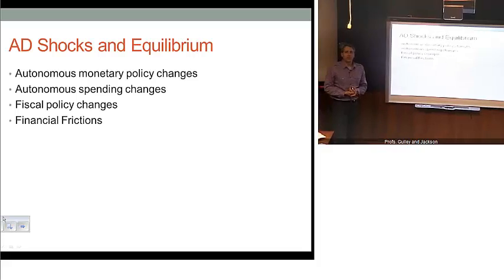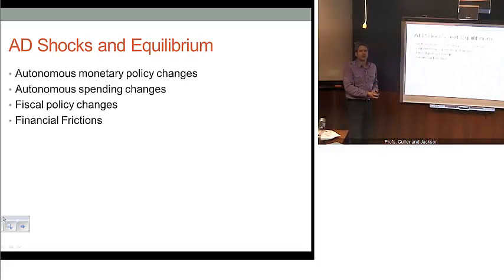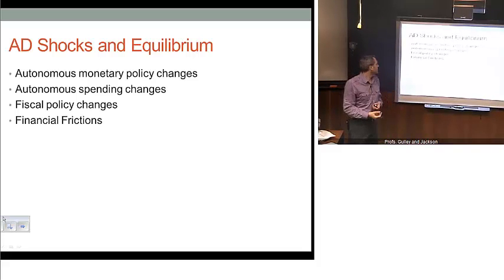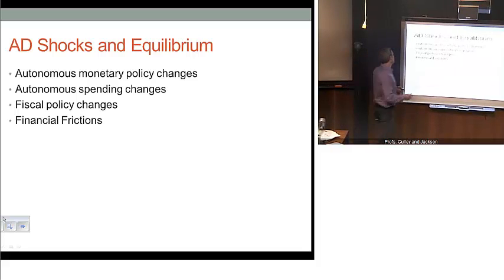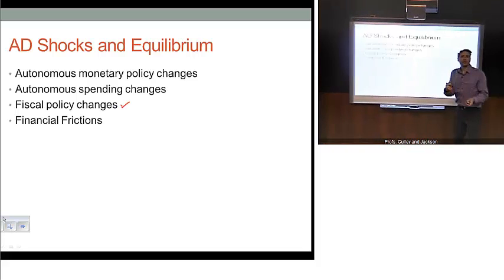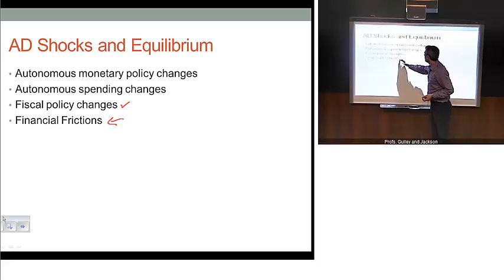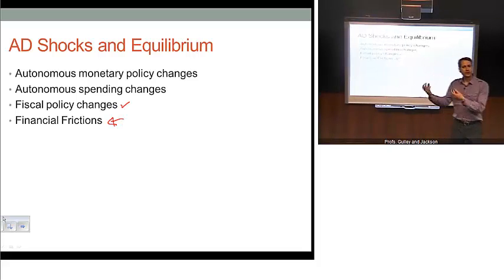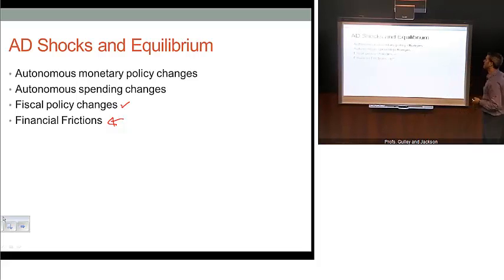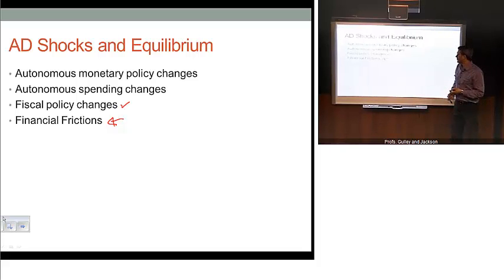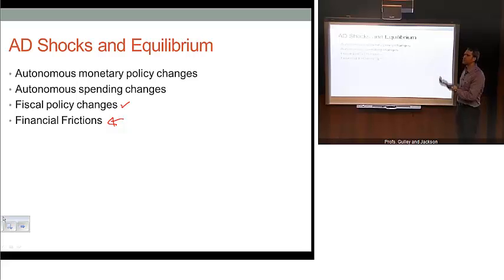Let's look at some changes to our equilibrium. How do we get changes in our short-run equilibrium? Those come through various shocks: changes in exogenous monetary policy, autonomous changes in spending, changes in fiscal policy — taxes and spending — and changes in financial conditions. As we saw in the financial crisis, tight credit raised the cost of borrowing substantially and increased credit spreads. All of these factor into different shocks that can cause changes in equilibrium.